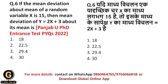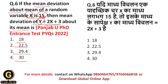If the mean deviation about the mean of a random variable x is 15, then the mean deviation of y = 2x + 3 about its mean is — options: 18, 22.5, 29.4, or 30. Here a random variable x has mean deviation about its mean equal to 15. We have defined a second random variable y = 2x + 3.